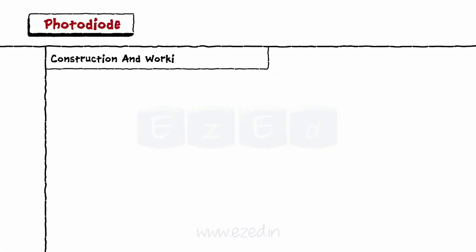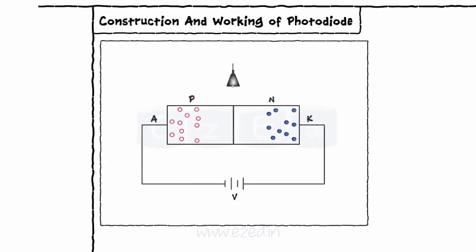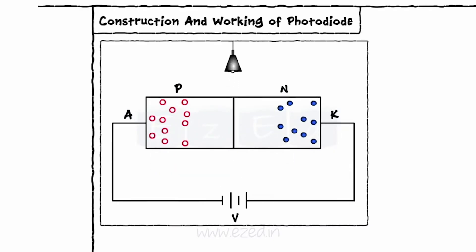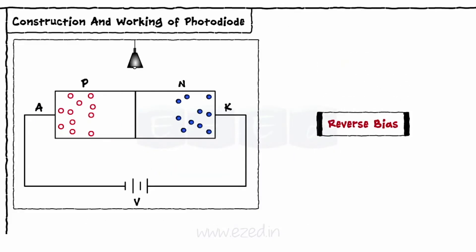Let's study construction and working of a photodiode. It is a diode which is always operated in a reverse bias mode. Due to reverse bias, it has a very wide depletion region.